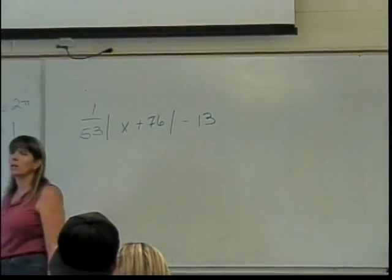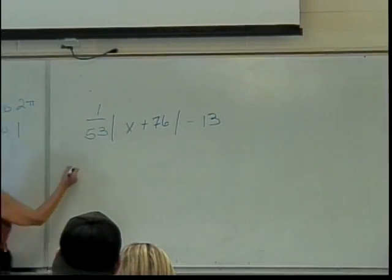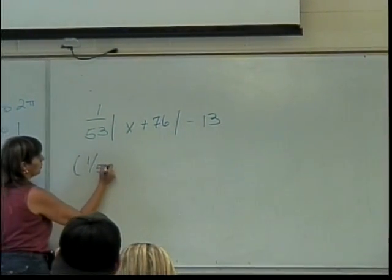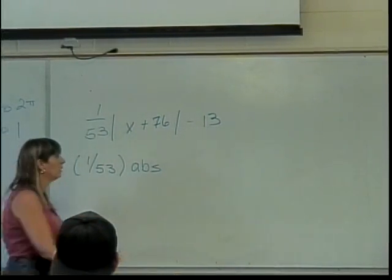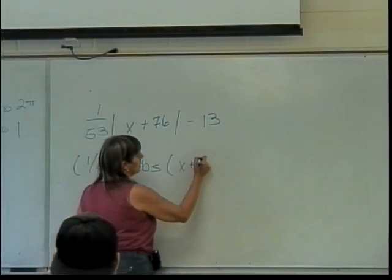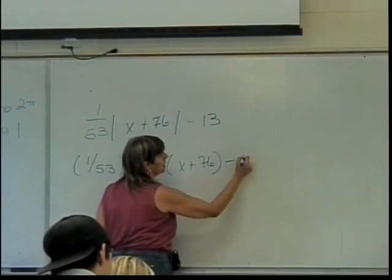Now if you had to write this in WebWork, just like on your calculator, you would put it in 1 divided by 53. ABS is absolute value for WebWork. Parentheses, X plus 76, close parentheses, minus 13.